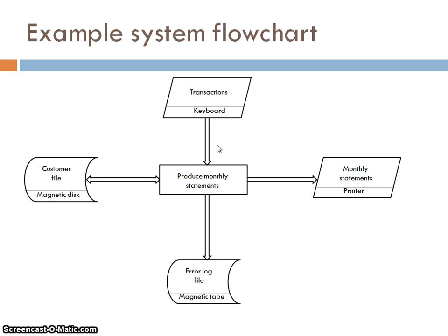We said that it updates the customer file on the magnetic disk. We can see that we need to retrieve the customer's data and we update it, but that is stored on the magnetic disk. We said the program sends monthly statements to the printer, and we can see that. That goes to an output device, which is the printer, output because the arrow is going out of the process. And it also stores on magnetic tape an error log. We can see that going on there. So that is a system flowchart.